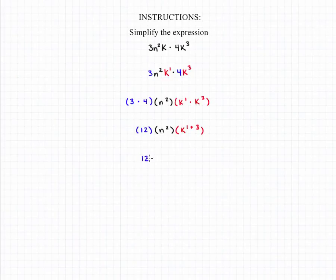Which is going to give us 12 times n squared times k to the 4th, and 12 n squared times k to the 4th is going to be our final answer.